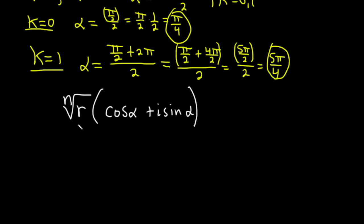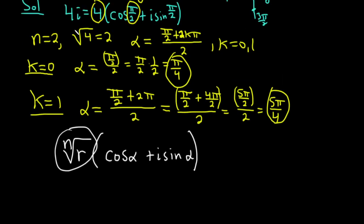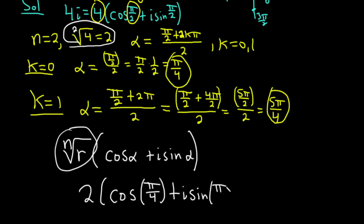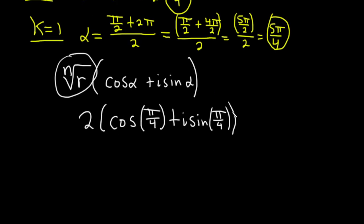So one of the square roots would be 2 cosine of pi over 4 plus i sine of pi over 4. So that would be one of the roots. You could work this out. So this would be 2 square root of 2 over 2 plus i square root of 2 over 2. Distribute the 2 and you simply get square root of 2 plus i square root of 2. The 2's cancel. So that's one of the roots.